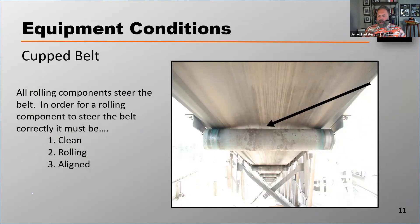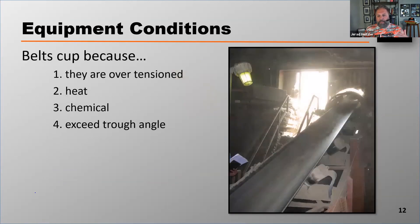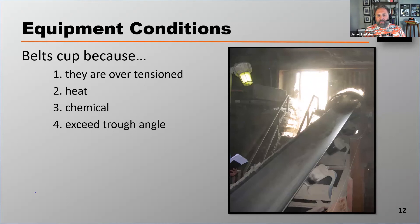Another reason why a belt can mistrack is anytime the belt is cupped. If we don't have our rolling component touching the belt, it's not going to steer the belt correctly. Belts can cup because they're over-tensioned — too much stretch on that belt can cause it to cup. Heat, if you're running hot material like smoldering coal, can cause the belt to cup. Certain chemicals could also cause a reaction with the rubber compound, causing the belt to cup.